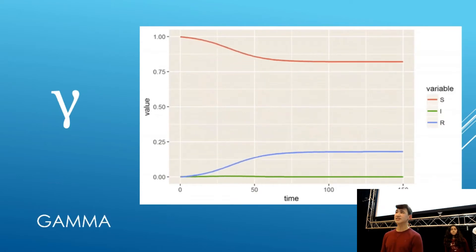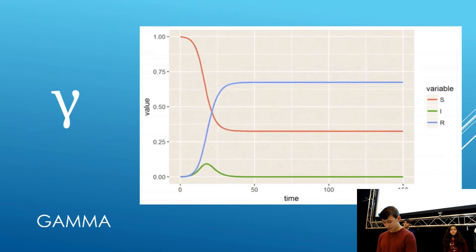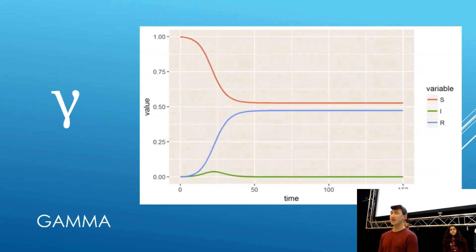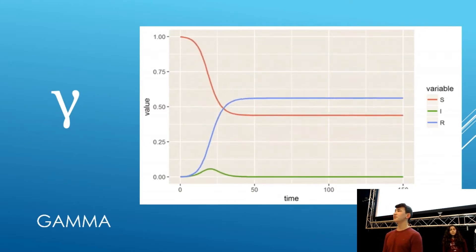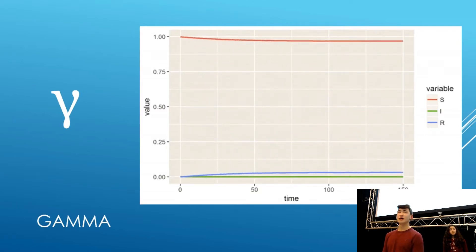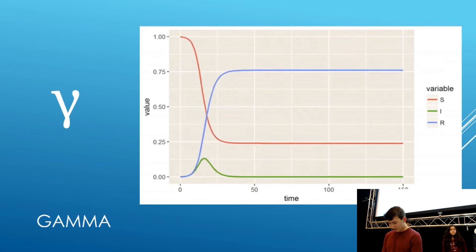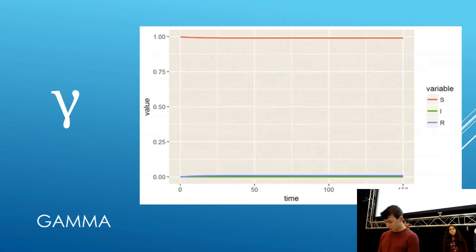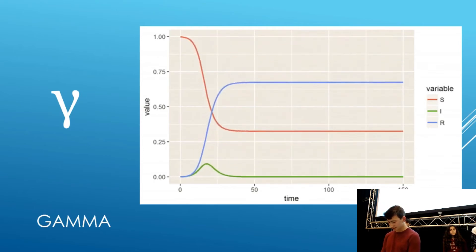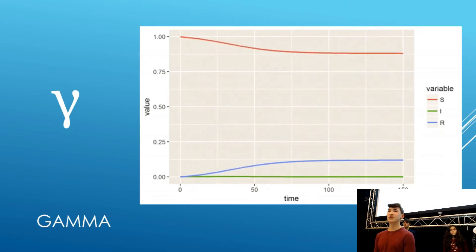The second parameter is gamma. Gamma controls the rate that an infected person will move into the recovered stage. If the infection lasts for K days, gamma will equal 1 divided by K. This is because all individuals will recover from the disease in an SIR model. However, in an SI model, gamma equals zero, and therefore individuals will not move into the recovered stage. As gamma increases, the time taken for an individual to recover decreases, so the maximum number of individuals infected at a time decreases. Due to this, more people will become immune quicker, and the infection will die off quicker.